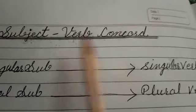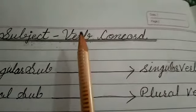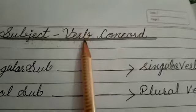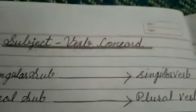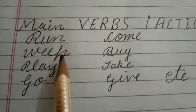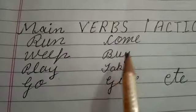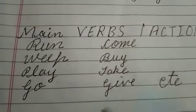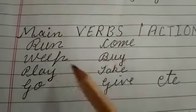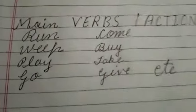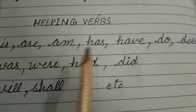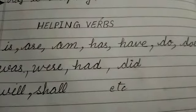When we talk about verb, it means the main verb or helping verb. For example, main verbs include run, play, go, come and so on — we also call them action words, and they have three forms. And when we talk about helping verbs, these are is, are, am, has, have, had, and so on.